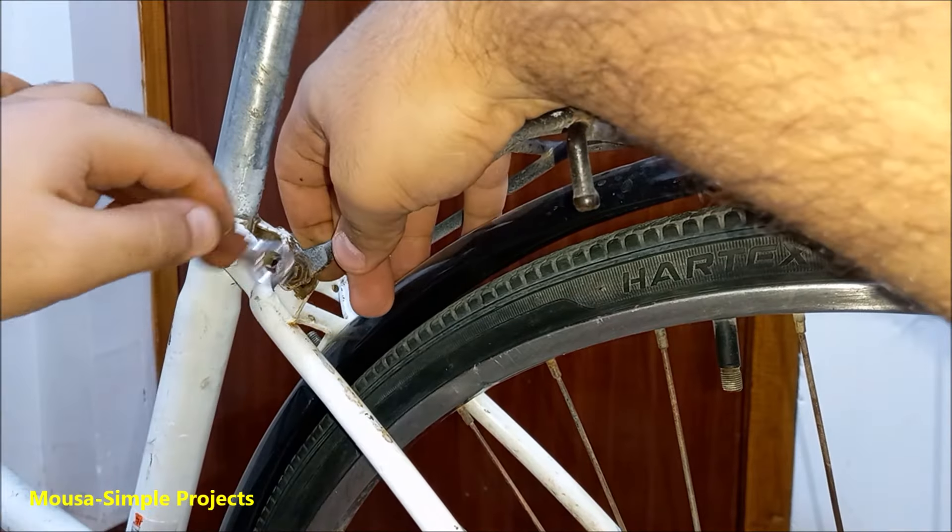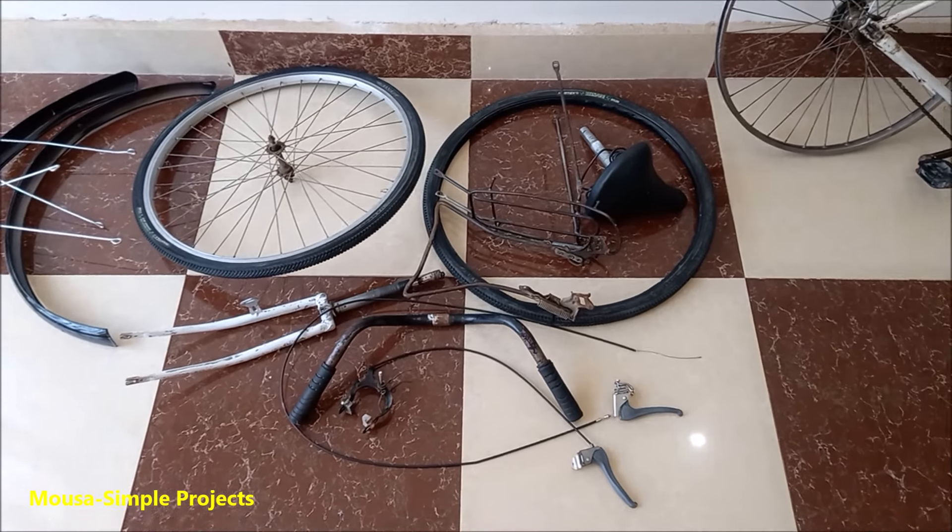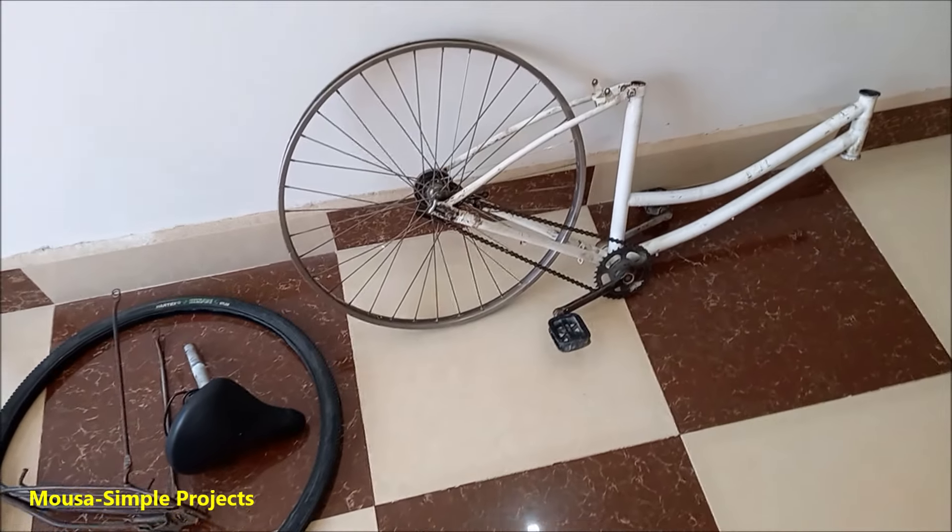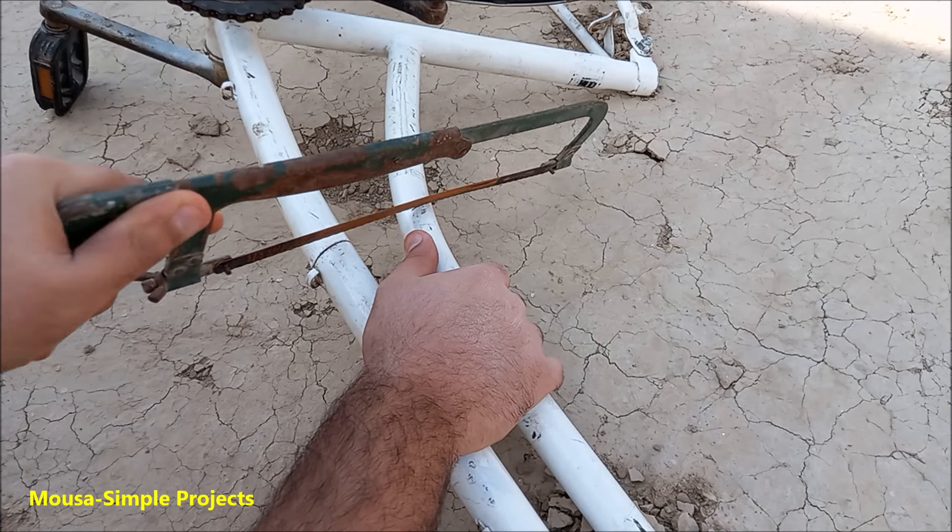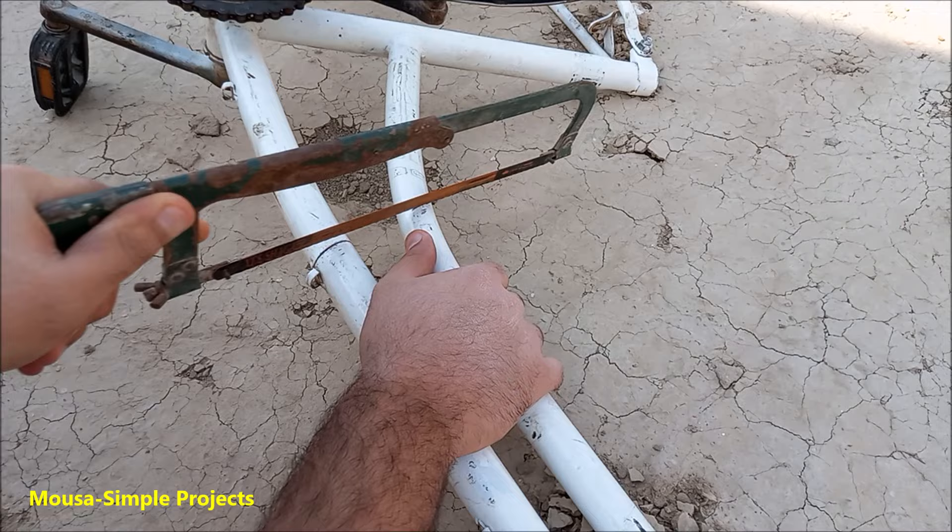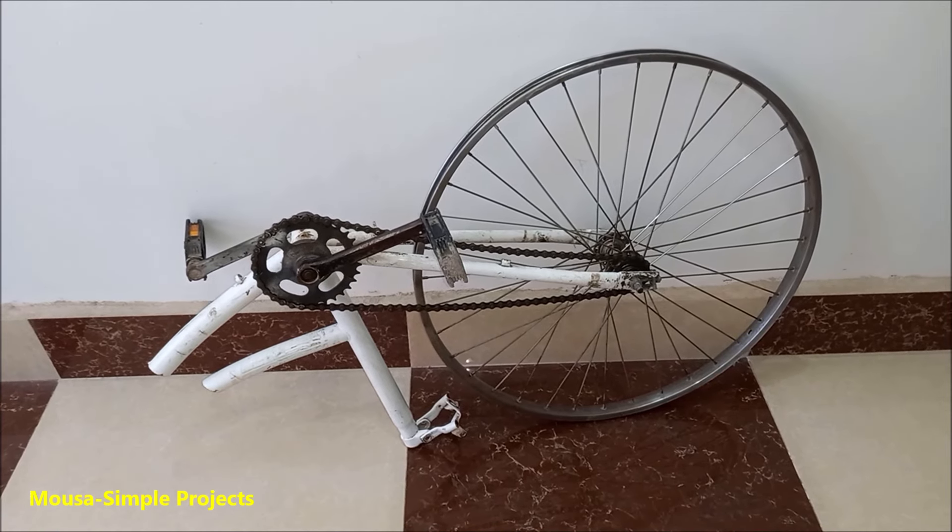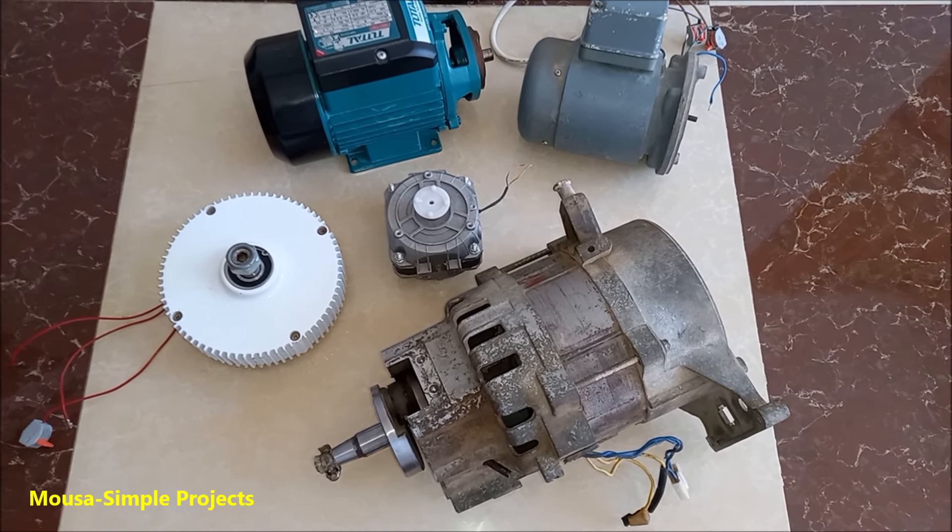So I started removing the unnecessary parts from the bike such as brakes, handlebars, saddle and so on. Then I had to cut the excessive frame by using a hacksaw. This portion is what remains from the bike.